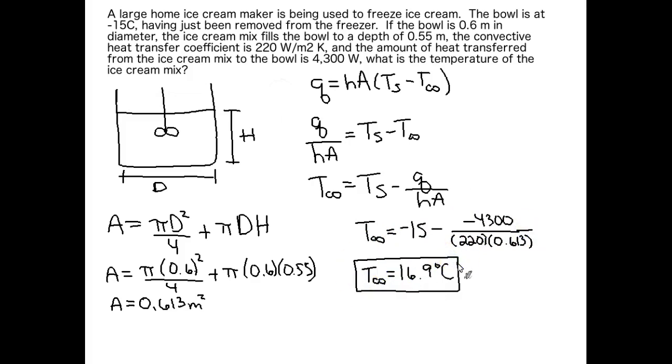Let's plug everything in and see what we get. T infinity is 16.9 degrees Celsius. So that means if our average room temperature is about 20 degrees Celsius, we just got started with this ice cream freezing process.